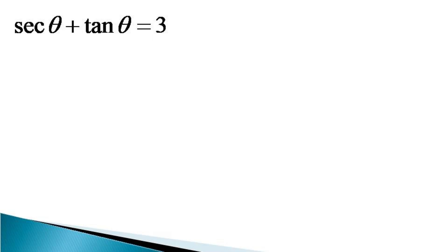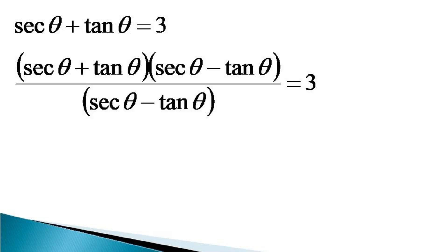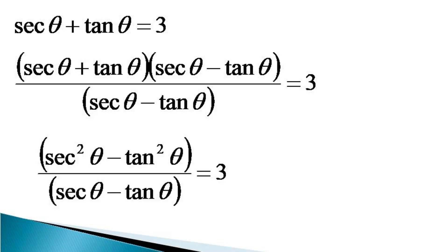The resulting condition becomes (sec θ plus tan θ)(sec θ minus tan θ) divided by (sec θ minus tan θ) is equal to 3. From the difference of squares formula, the numerator becomes sec²θ minus tan²θ, and the condition becomes (sec²θ minus tan²θ) divided by (sec θ minus tan θ) is equal to 3.